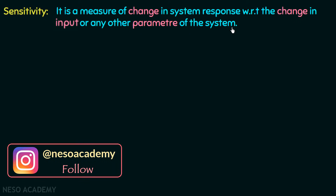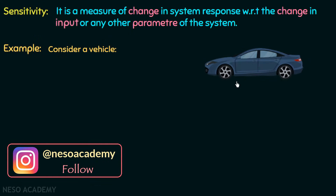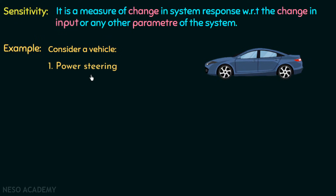Let us understand this with the help of an example. Suppose we are having a vehicle with power steering. Consider a situation where you are driving this vehicle and you rotate the steering — the car will rotate accordingly, and in case of a power steering, the car will rotate smoothly. Here, the power steering signifies the input given to the system, this system is our vehicle, and the rotation of the vehicle is the response of the system.